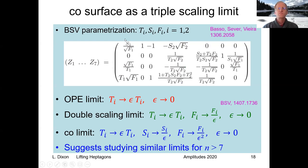Basso, Sever, and Vieira gave a nice parametrization of seven-point kinematics involving variables that behave well in the OPE limit. The momentum twistors can be written explicitly in terms of these six variables. The OPE limit they considered first was to take these T's and make them very small holding S and F fixed. But they also considered a double scaling limit where they make F big at the same rate that T gets small. The CO limit is sort of a triple scaling limit where you scale T, S, and F using epsilon in this fashion so F gets especially big. This fact that there's a simple description of this surface suggests that maybe similar things will be useful when we go beyond seven points.